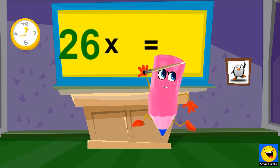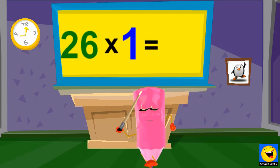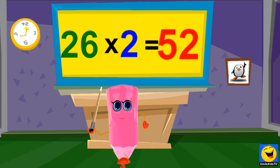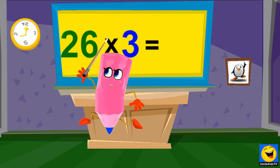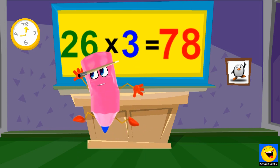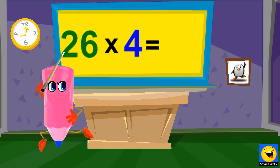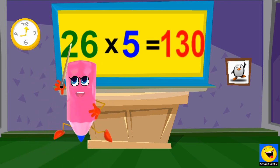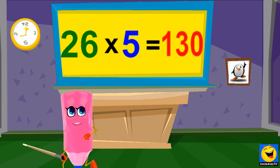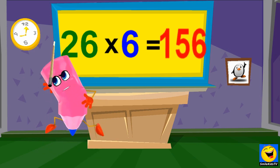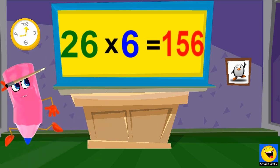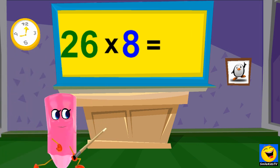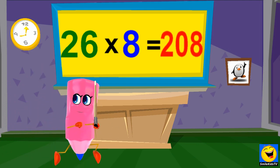26 times 1 is 26. 26 times 2 are 52. 26 times 3 are 78. 26 times 4 are 104. 26 times 5 are 130. 26 times 6 are 156. 26 times 7 are 182. 26 times 8 are 208.